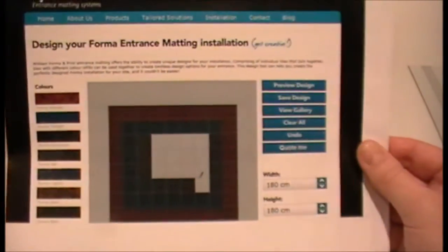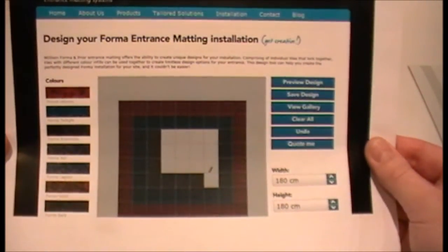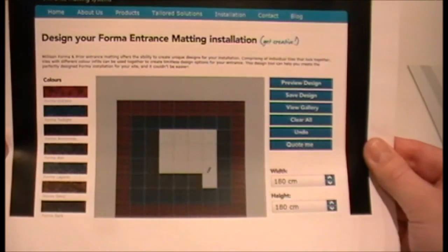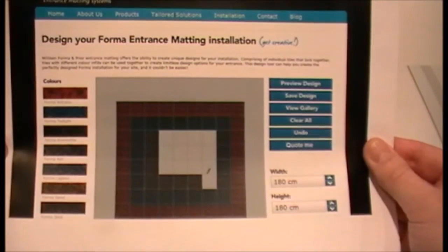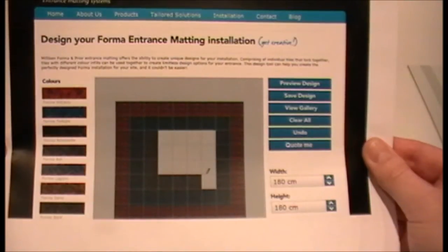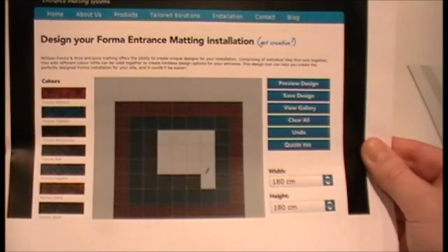On the Synchros website, which you can see a snapshot of here, you can use a paintbrush tool to design your own matwell using the colourways or view designs in the gallery. You can go to this website at www.synchros.co.uk/dyo.